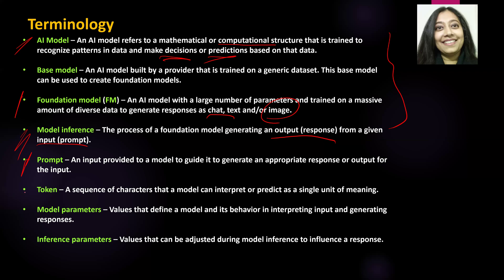The next term is token. A token is a sequence of characters that a model can interpret as a single unit. Similar to how a byte is made of eight bits as a single unit, a token is a sequence of characters that a model interprets as a single unit. When you work with different models, it will tell you the number of tokens that model can process — typically the number you'll see is 512.